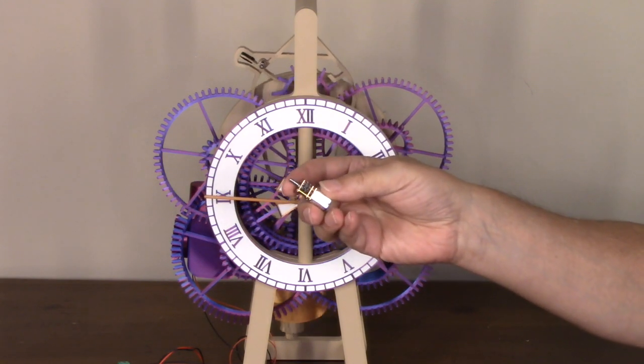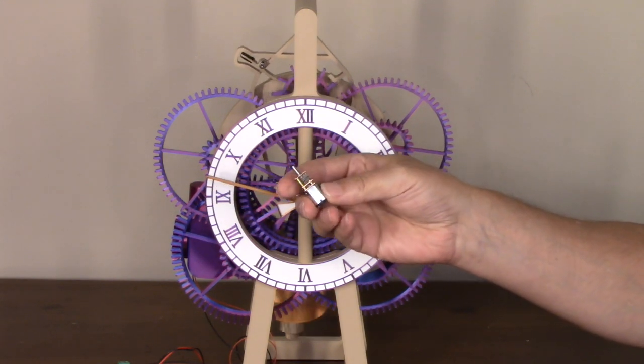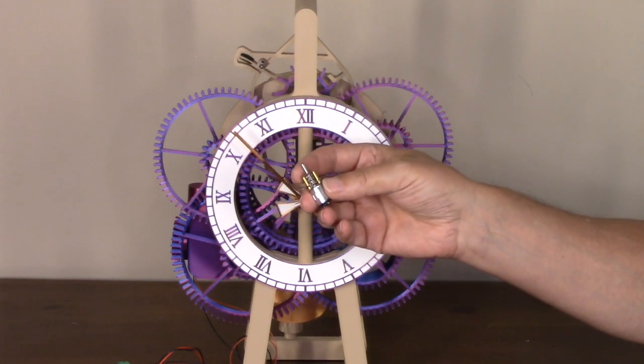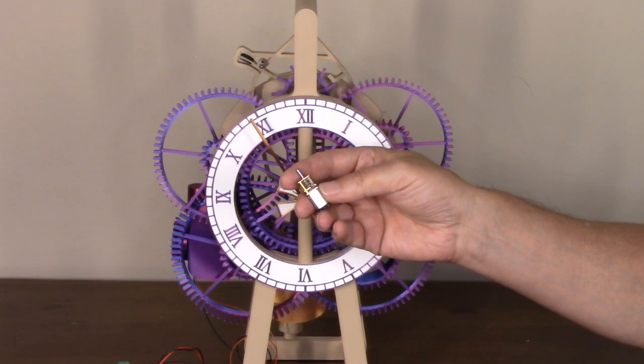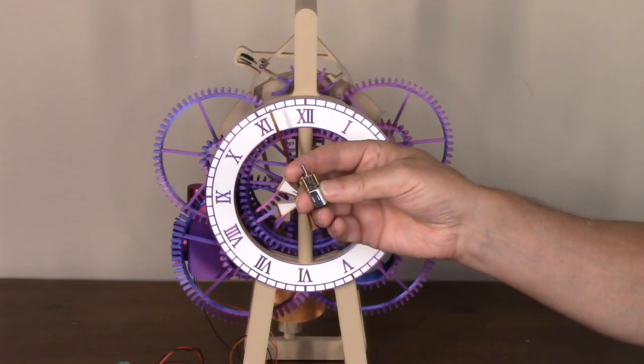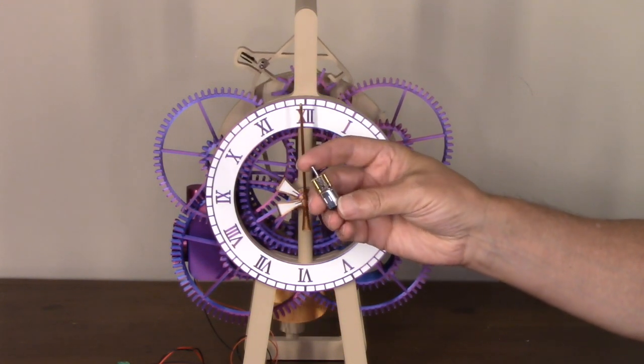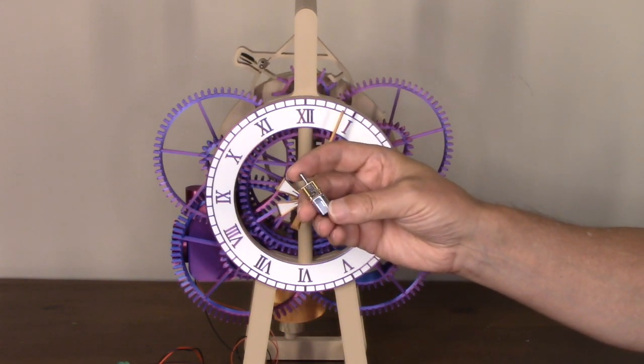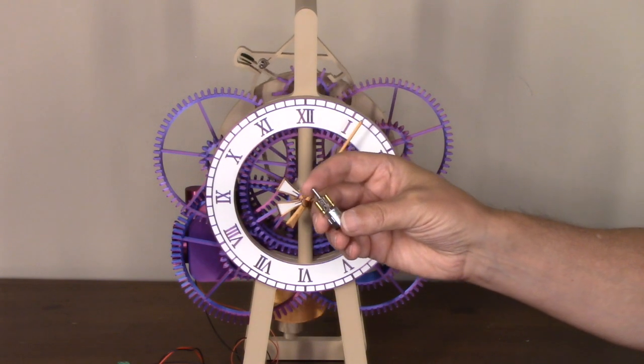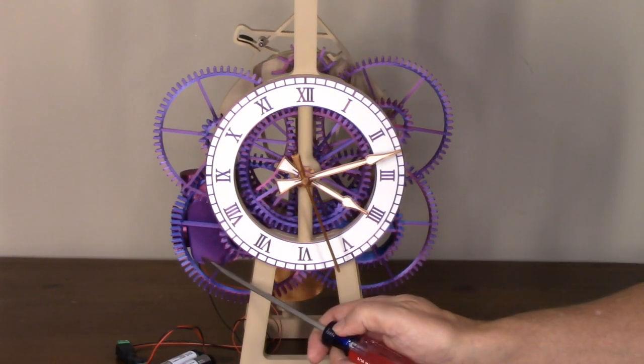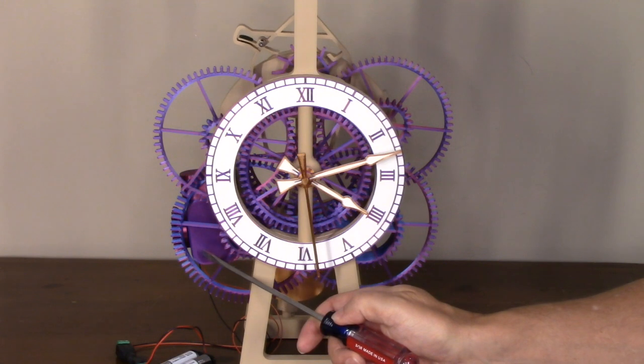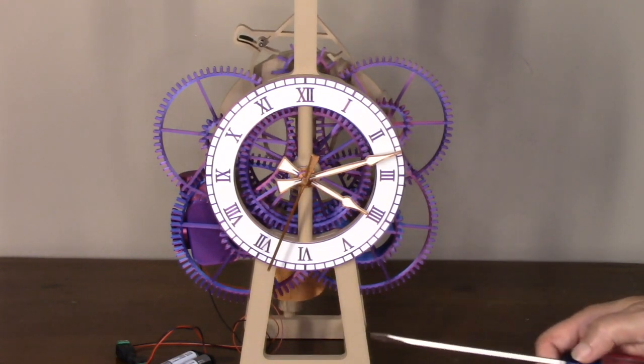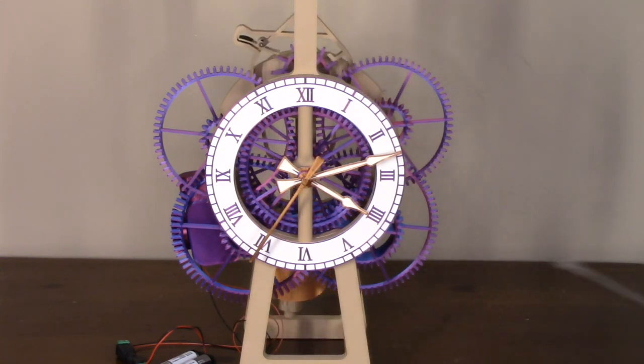This clock has a motorized rewind using some really tiny N20 motors. I tested a lot of motors and this one was by far the quietest and also the lowest power. The small size makes it really easy to fit inside this clock. The motor is hidden inside a box over here with a couple of small weights and every three or four minutes the motor will rewind the clock.